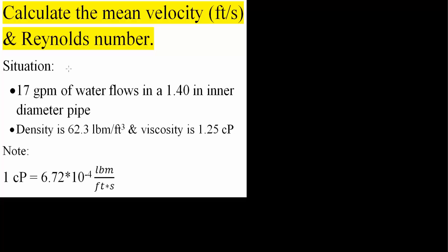In this video, we will calculate the mean velocity and Reynolds number. Here's our situation: we have 17 gallons per minute of water flowing in a 1.4 inch inner diameter pipe. The density of water is 62.3 pound mass divided by feet cubed, and the viscosity is 1.25 centipoise. Note that 1 centipoise is equal to 6.72 × 10⁻⁴ pound mass divided by feet times seconds.